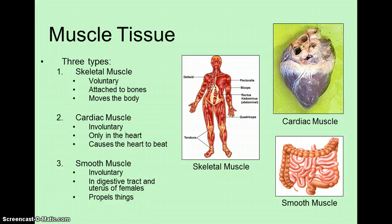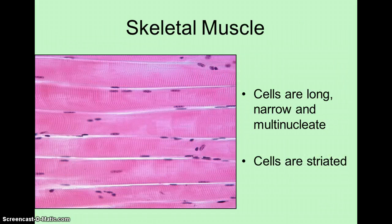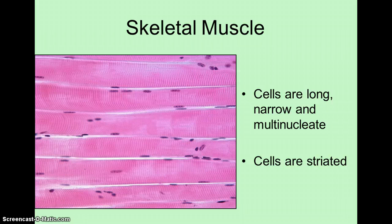You may be learning how to identify the different types of muscle tissue in lab, or you will learn how to do this later when we get to the musculoskeletal system. To make sure that we are all on the same page, I want to talk a little bit about the microscopic structure of each type of muscle tissue. Skeletal muscle cells are very different in their structure from other types of cells — they are very long and cylindrical.